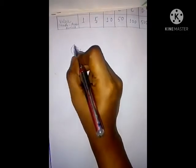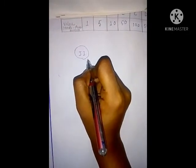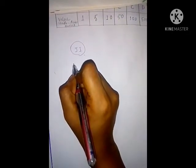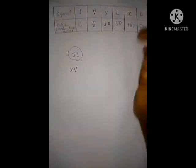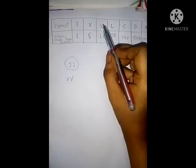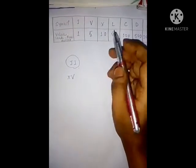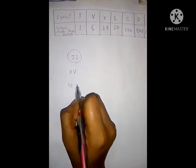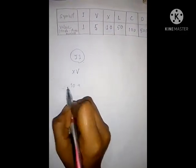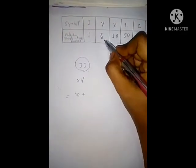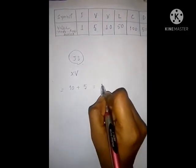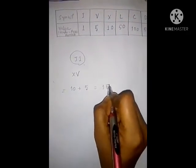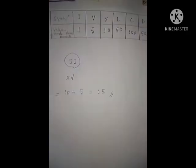See the chart: X means 10, and V means 5. Since V is placed after X, which has greater value, we add them: 10 plus 5 equals 15. So the value of XV is 15.